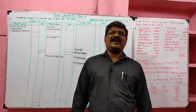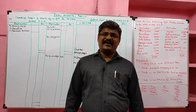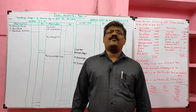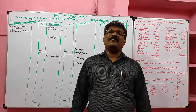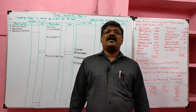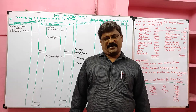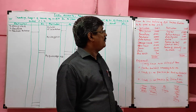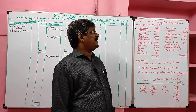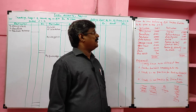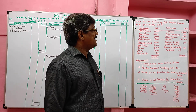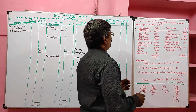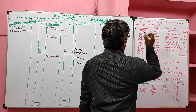Today we are going to learn final accounts with bad debts, provision for bad and doubtful debts, and provision for discount on debtor. Now we will solve one problem. This question I have taken from the Tamil Nadu government 11th standard textbook. I am going to read the problem — listen carefully.